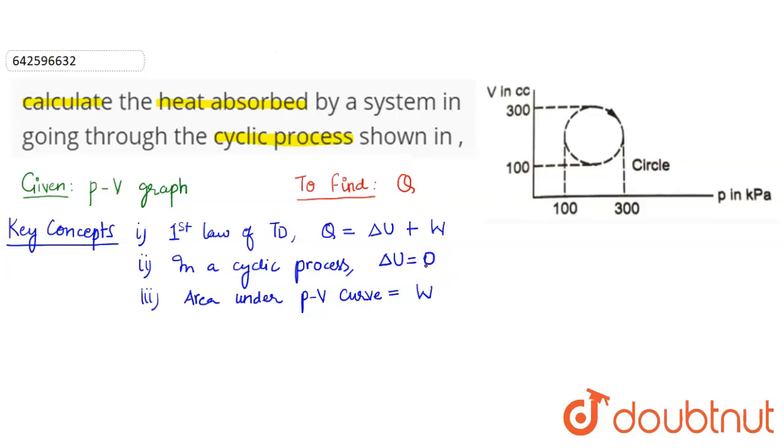Okay, so from the first law we can say Q is equals to ΔU plus W. As we said from the second point, the change in internal energy would be zero because of the cyclic process, so we will have Q equals W. That is, the heat absorbed is equals to the work done by the system.